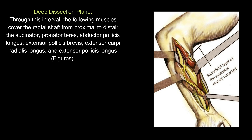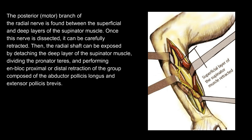Deep dissection plane. Through this interval, the following muscles cover the radial shaft from proximal to distal: the supinator, pronator teres, abductor pollicis longus, extensor pollicis brevis, extensor carpi radialis longus, and extensor pollicis longus. The posterior motor branch of the radial nerve is found between the superficial and deep layers of the supinator muscle. Once this nerve is dissected, it can be carefully retracted.